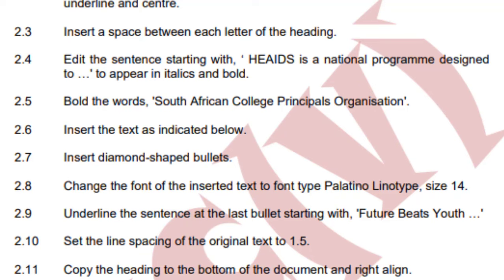Set the line spacing of the original text to 1.5 — I've done that one. Copy the heading to the bottom of the document and add a line. So I'm going to do that as we continue. So now we need the text to come here. Then we edit the text. After editing the text here, we will take this heading and put it below the text after the text is there.